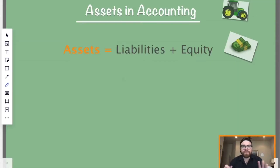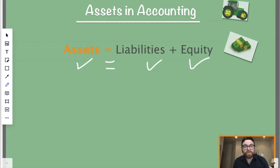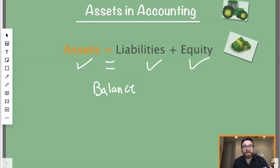Now to explain this further, let's jump into my computer. So assets in accounting — the first thing you talk about is the accounting equation: Assets equals liabilities plus equity. This is the most important part. It must equal, and so we call this balancing. This is called the fundamental accounting equation. We won't talk too much about liabilities and equity in this video, but assets is what we're talking about here.